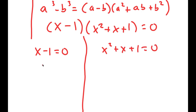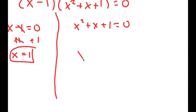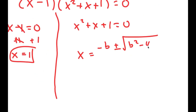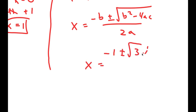For x minus 1 equals 0, all I have to do is add 1 on both sides and I get x is equal to 1. And for x squared plus x plus 1 equals 0, I can use the quadratic formula. By using it I get x is equal to negative 1 plus or minus the square root of 3i, over 2. So these are two more solutions.